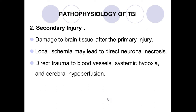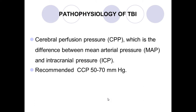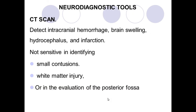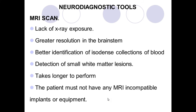Diffuse axonal injury results from acceleration and deceleration forces in motor vehicle accidents. Lateral impact tends to lead to poor outcomes. The midbrain, corpus callosum, and white matter can be damaged, responsible for initial loss of consciousness. There will be axonal swelling and disconnection, and this is a risk factor for the development of Alzheimer's disease and dementia.